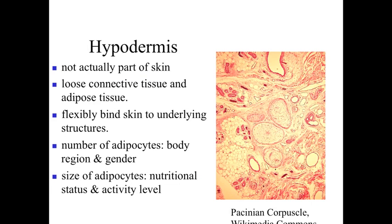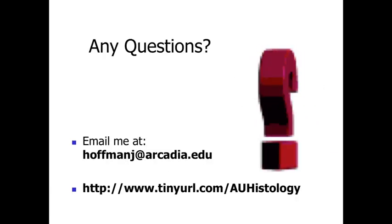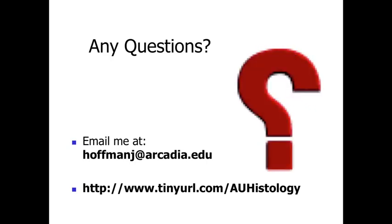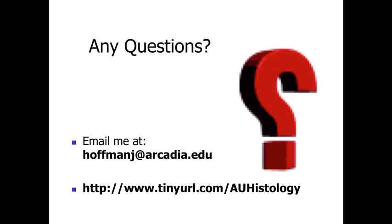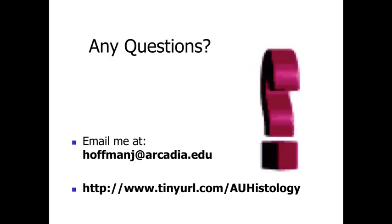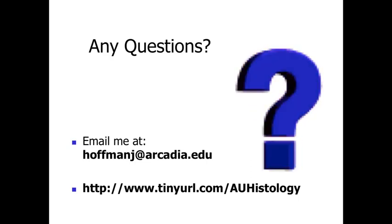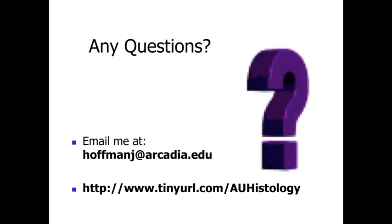The hypodermis flexibly binds the skin to the underlying tissues. The number of adipocytes is dependent upon the body region and gender, while the actual size of the fat cells is based on nutritional status and activity level. That finishes our discussion of the dermis and hypodermis. In part four, we'll talk about ancillary or specialized structures associated with the skin. If you have any questions, feel free to email me at hoffmanj at arcadia.edu.